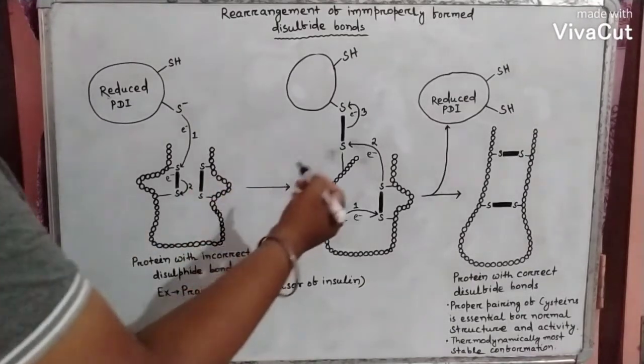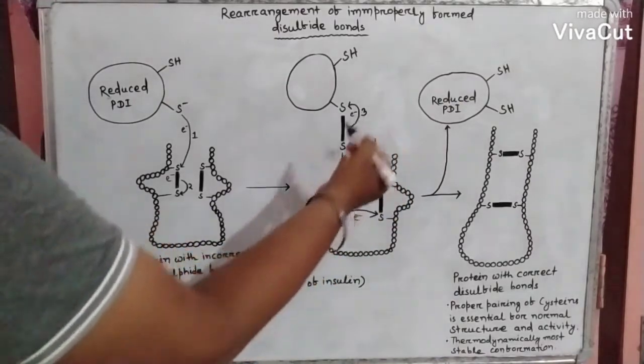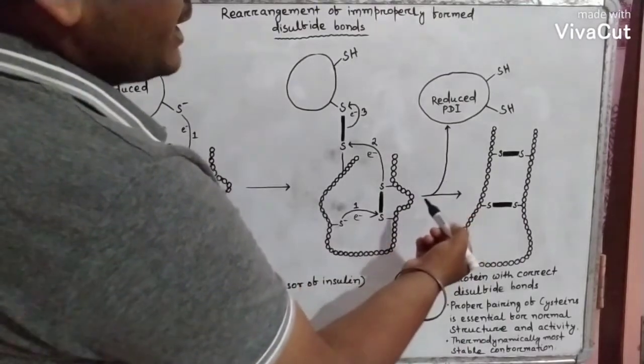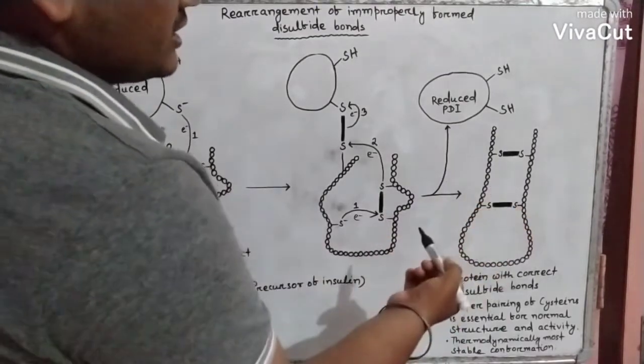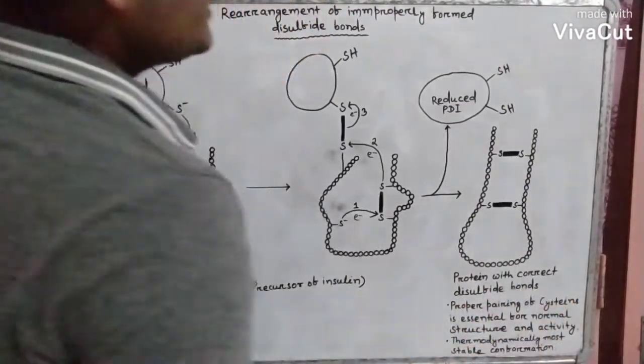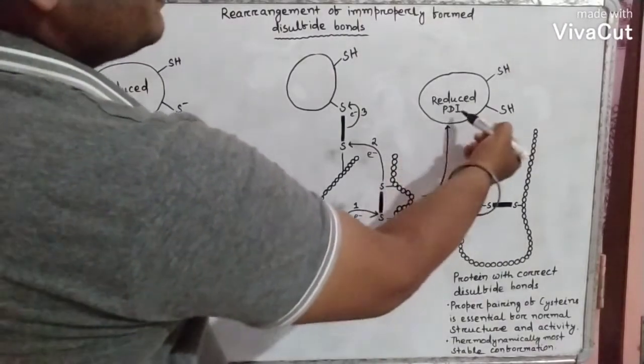In the next step, the same electron transfer reaction is repeated. Due to the rearrangement of disulfide bonds, the protein with correct disulfide bonds is formed, along with the release of reduced PDI.